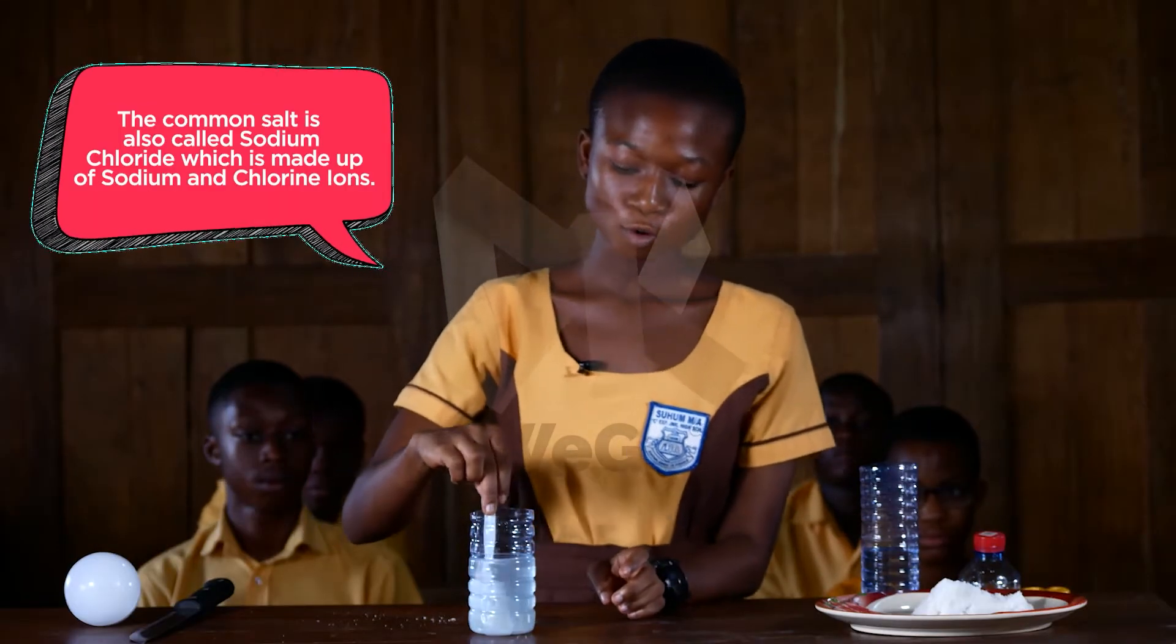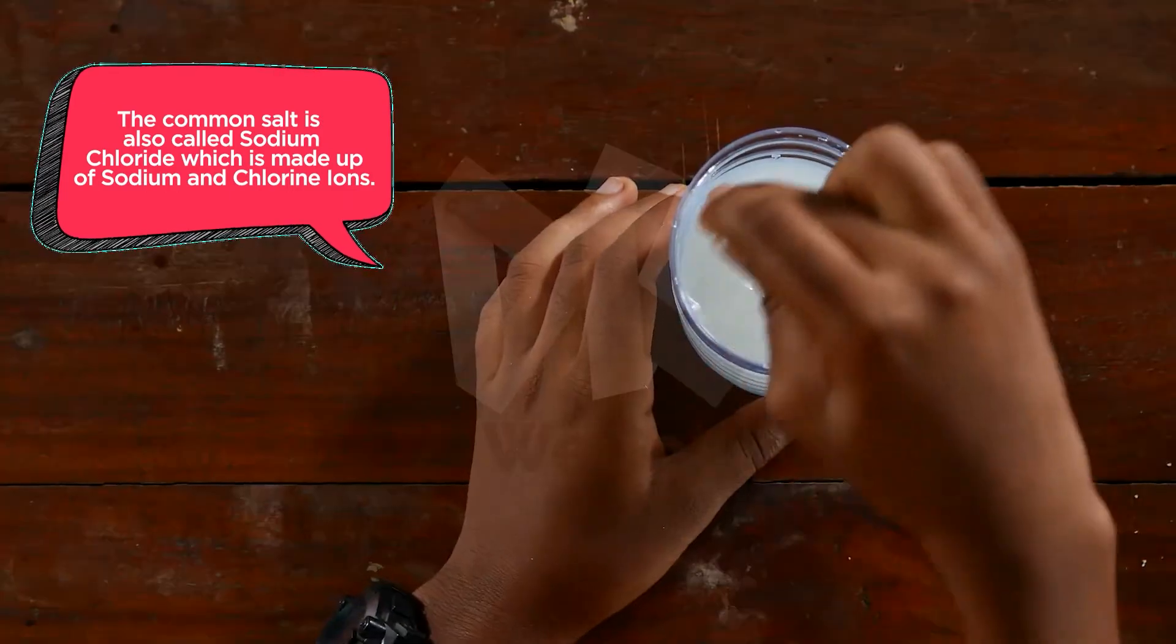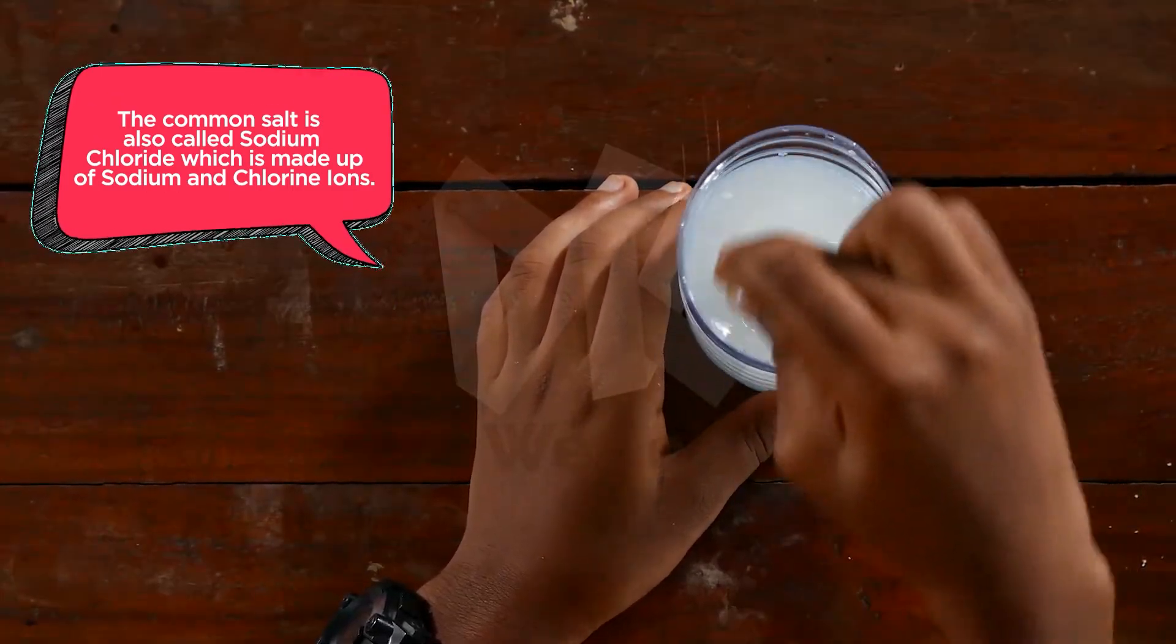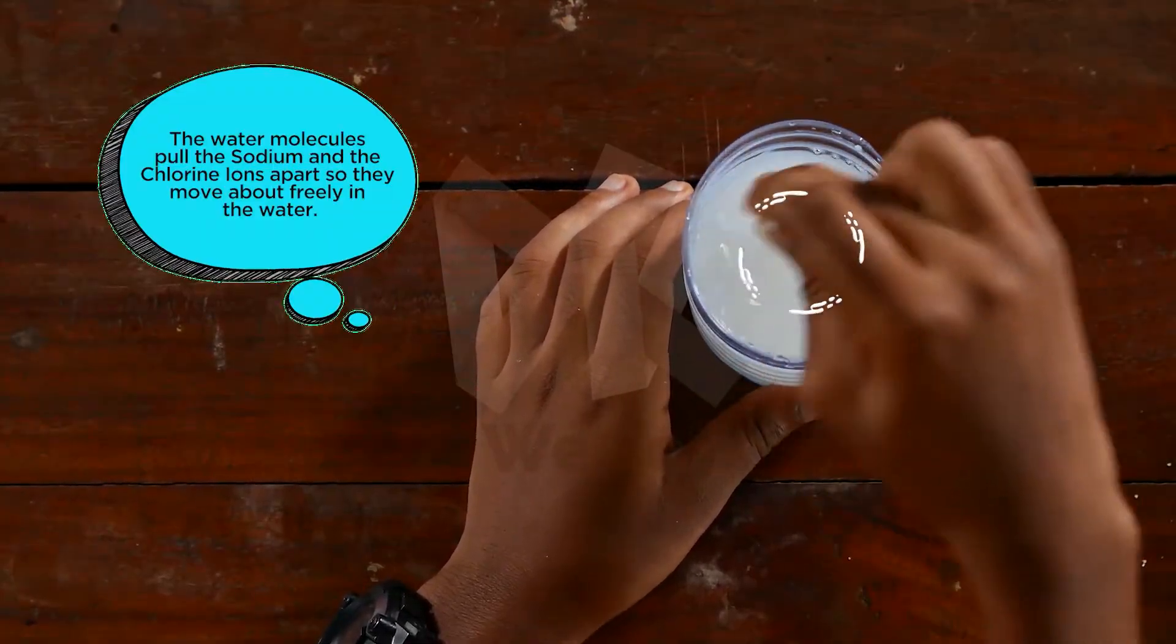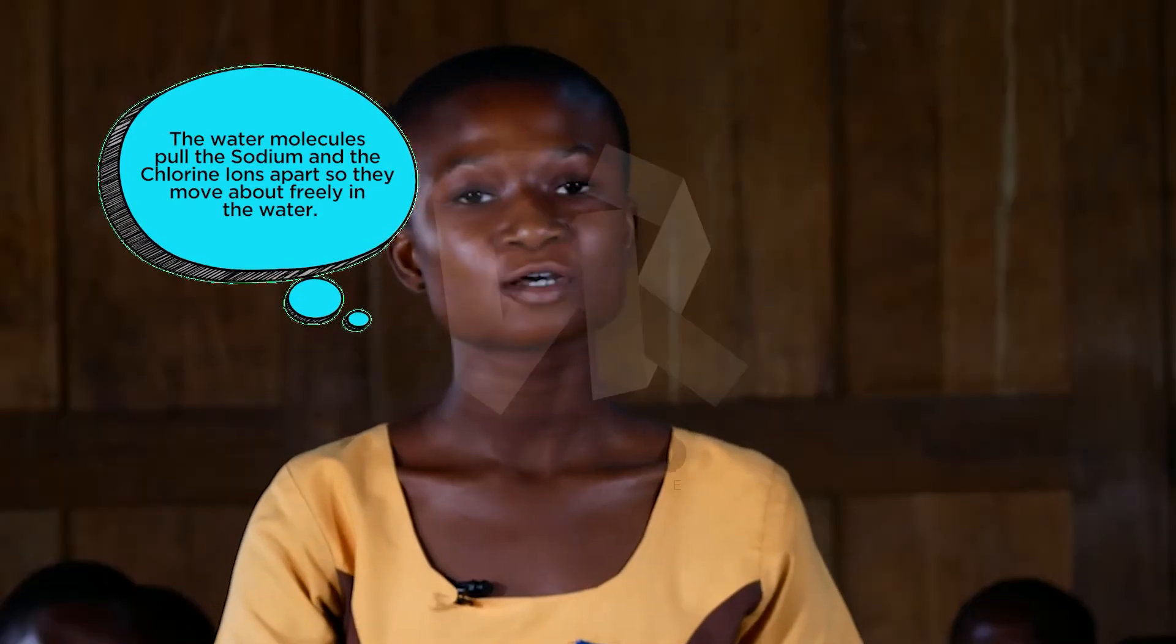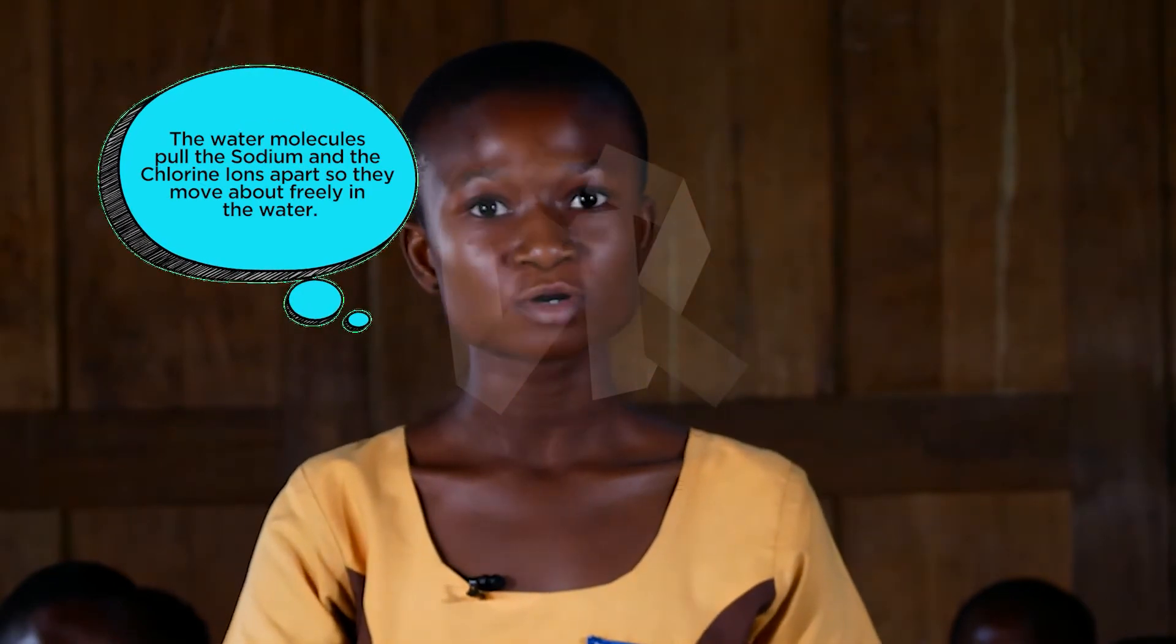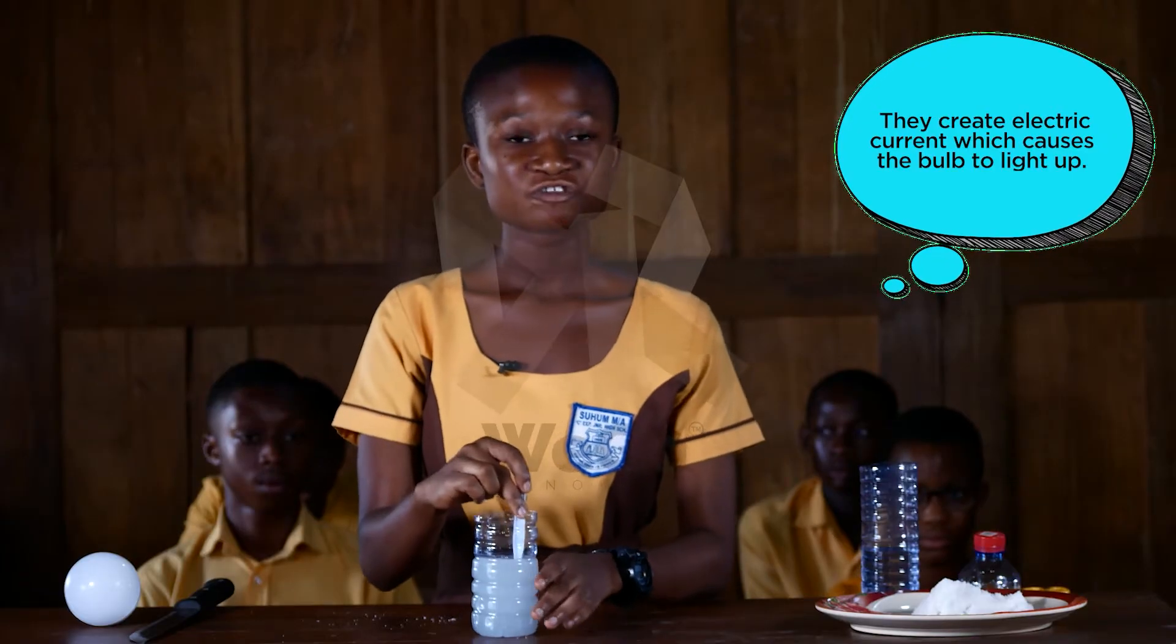The common salt is also called sodium chloride, which is made up of sodium and chlorine ions. The water molecules pull the sodium and the chlorine ions apart so they move about freely in the water. They create electric current which causes the bulb to light up.